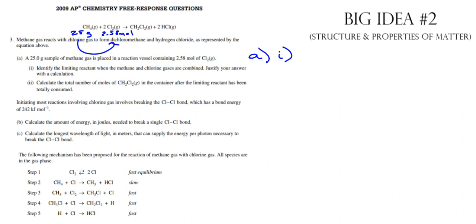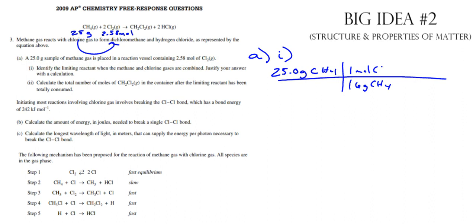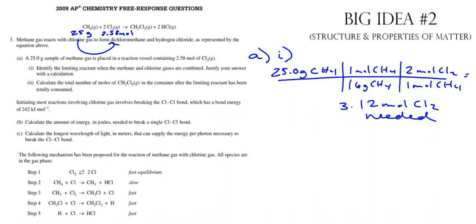I needed that much, but I only have 2.58. You've got to make sure you answer it. You need to say 'needed, thus Cl2 is the limiting reactant.' If you felt like you needed more, I would have just said: needed 3.12, only have 2.58 - something like that.